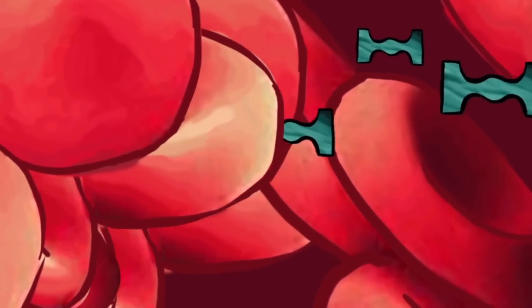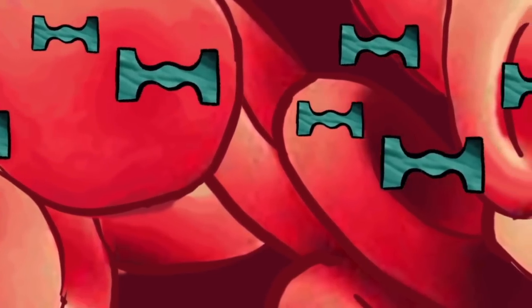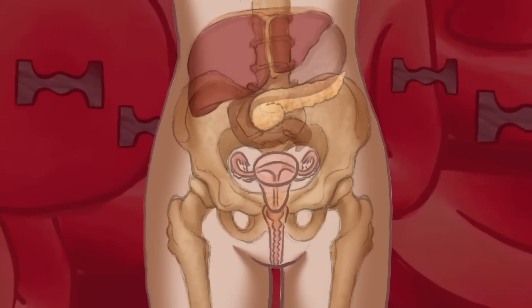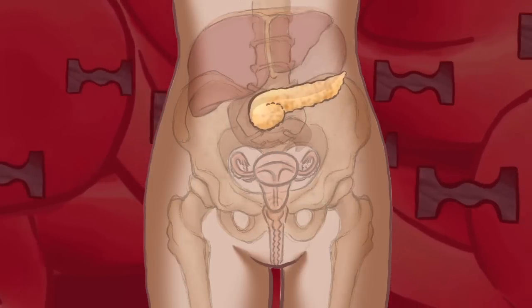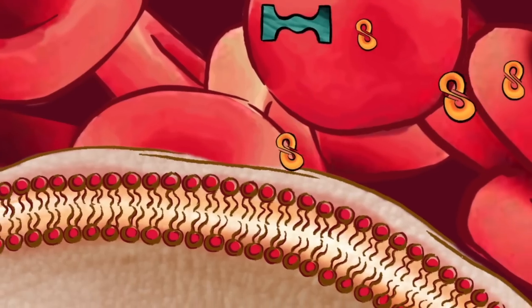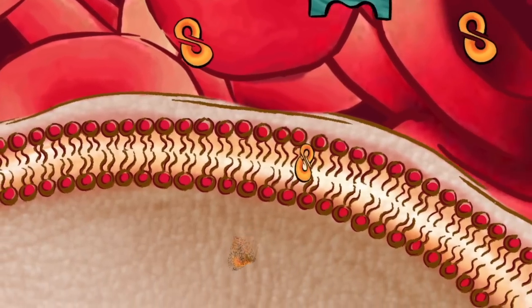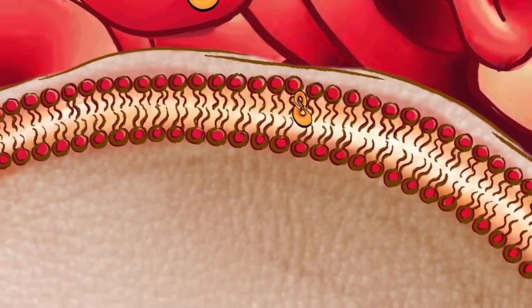Insulin is the body's primary way of telling the organs and tissues of the body that there is plenty of energy to burn. The pancreas releases insulin into the blood in response to increased blood sugar, which tells the cells of the body to start absorbing that sugar from the blood.